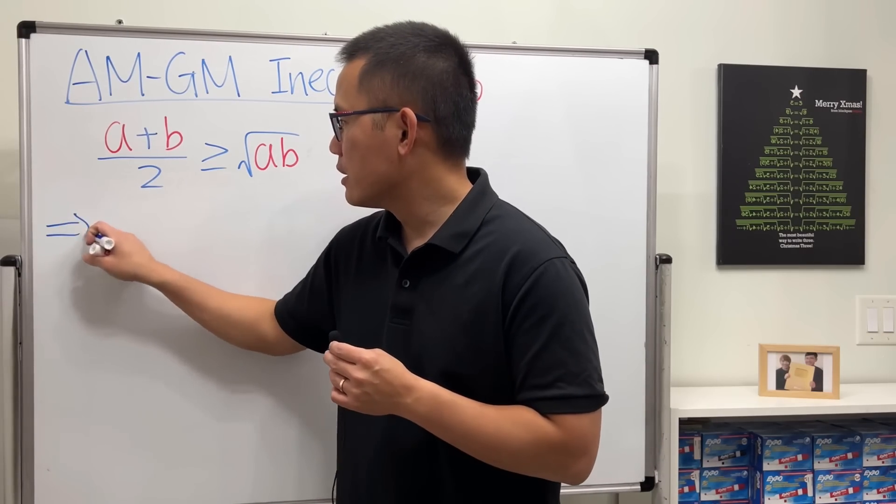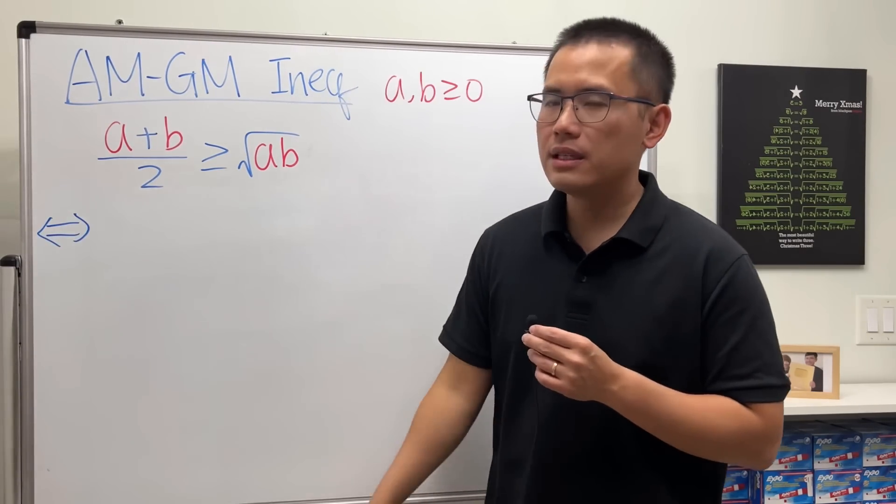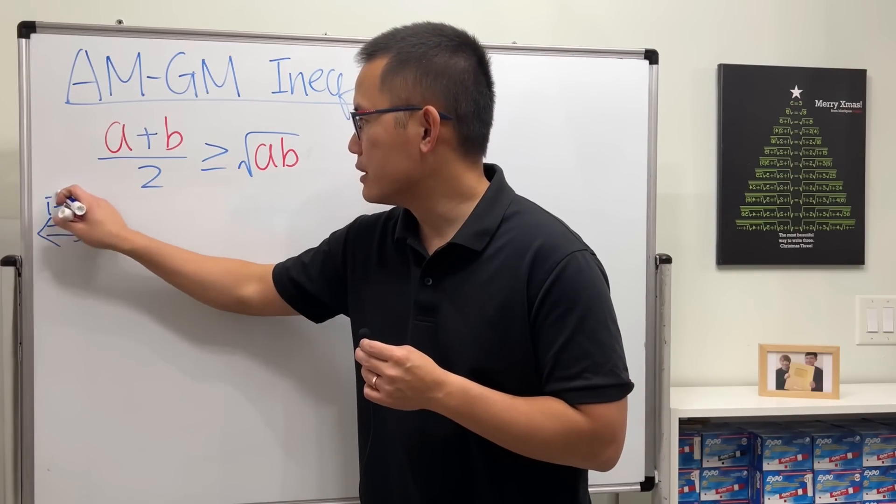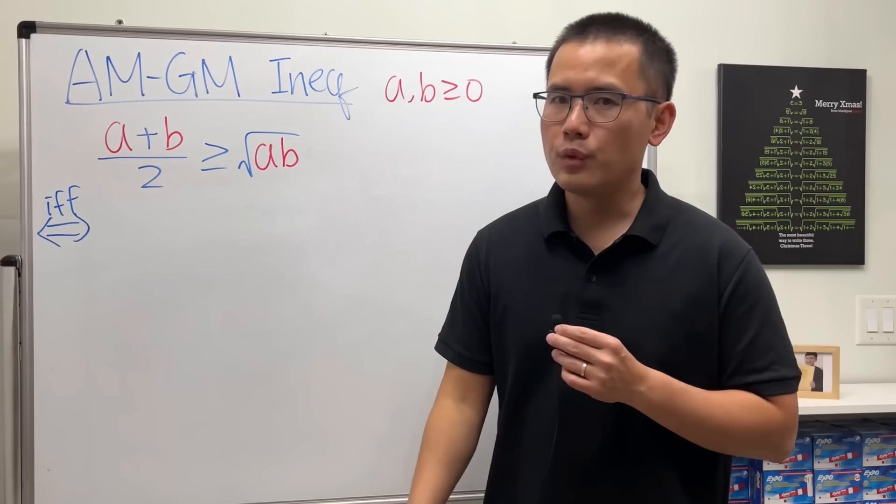So I will just be drawing the bi-directional arrow like this, and in fact in math we call this 'if and only if,' which really means if this is true then this will be true, and if this is true then this has to be true as well.